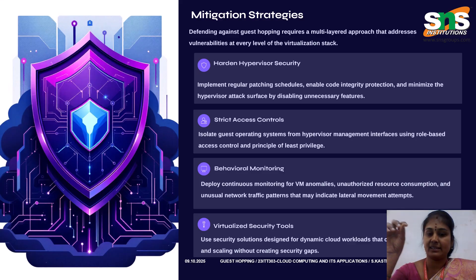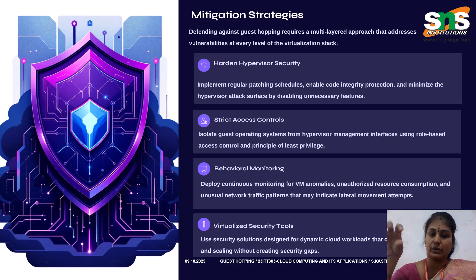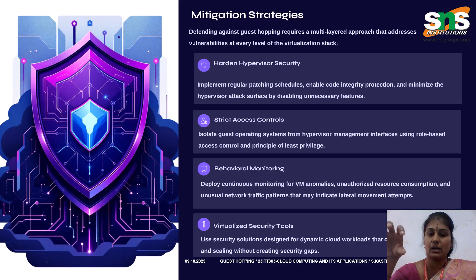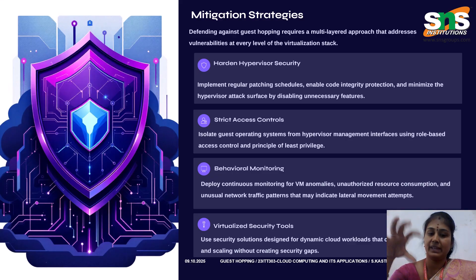Mitigation strategies for fighting guest hopping include building stronger walls and alarms. First, harden hypervisors with regular patching — such as VMware ESXi 7.0 updates — and disable unused modules. Second, enforce strict access controls using a least privilege model with separate VM admin and hypervisor roles. Third, implement behavioral monitoring using AI-based tools like Microsoft Defender for Cloud to detect unusual VM behaviors. Fourth, deploy workload-aware firewalls that adapt to VM migration, such as Palo Alto Prisma Cloud.